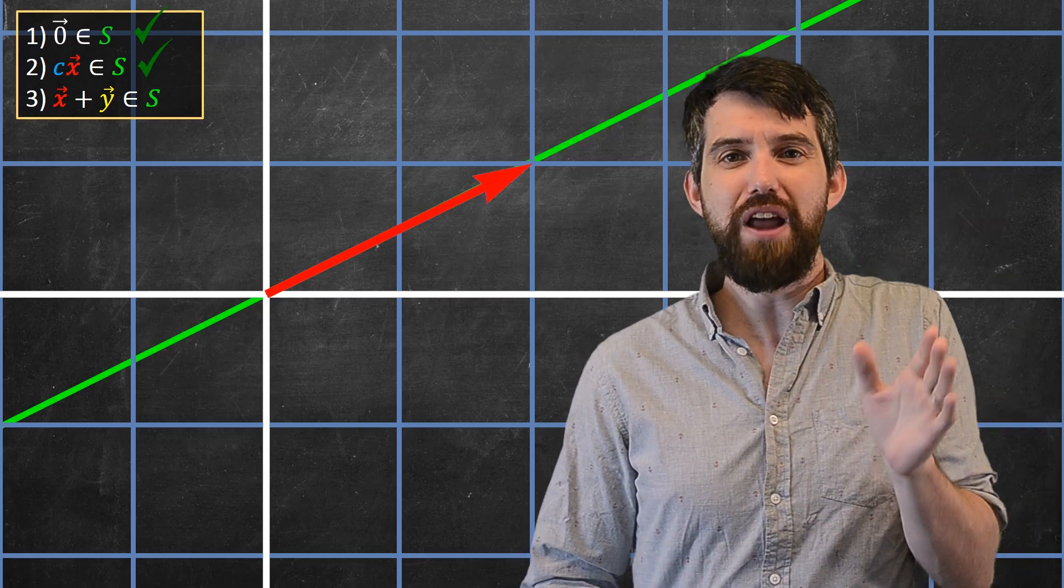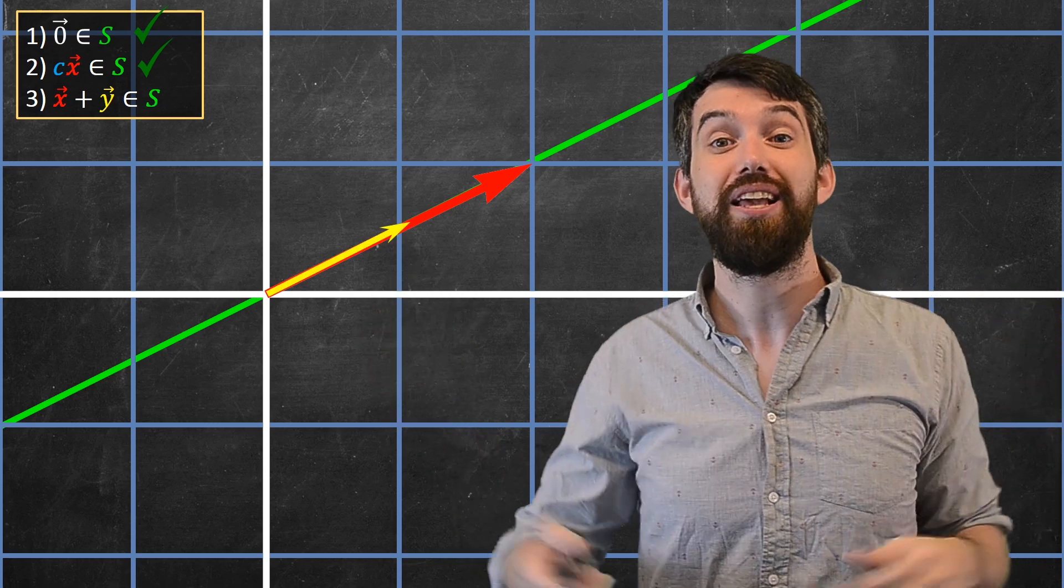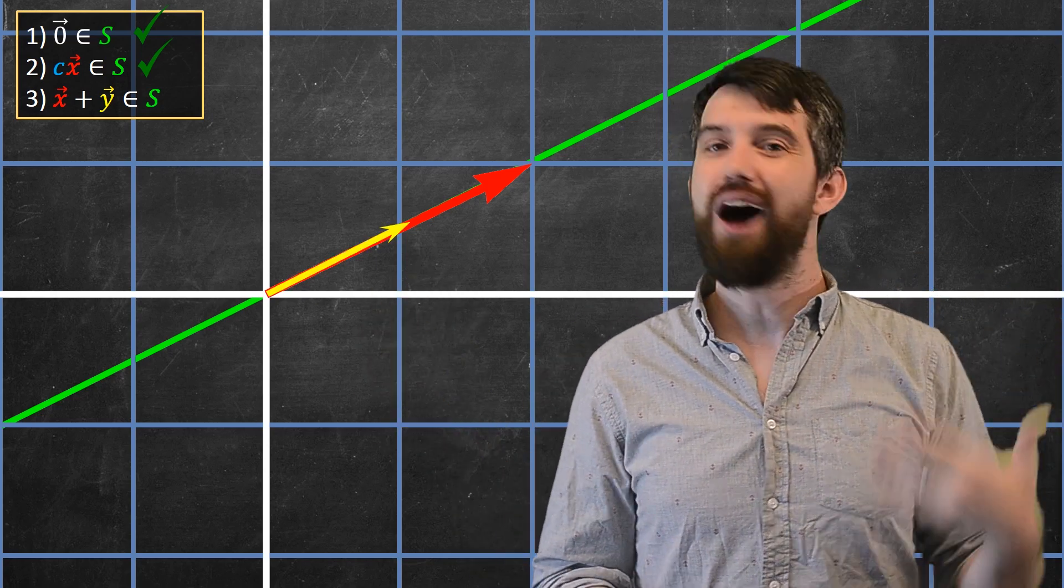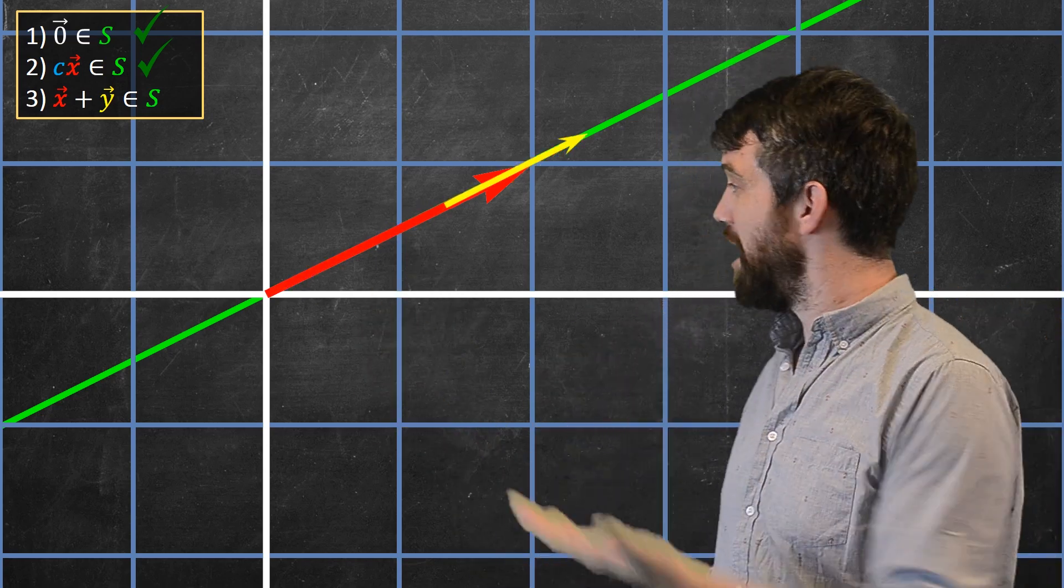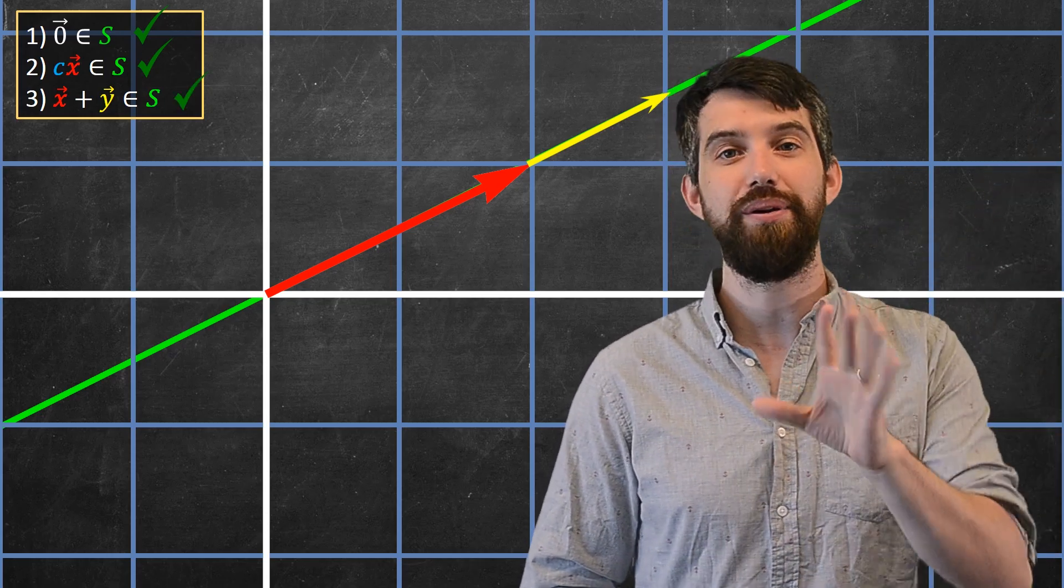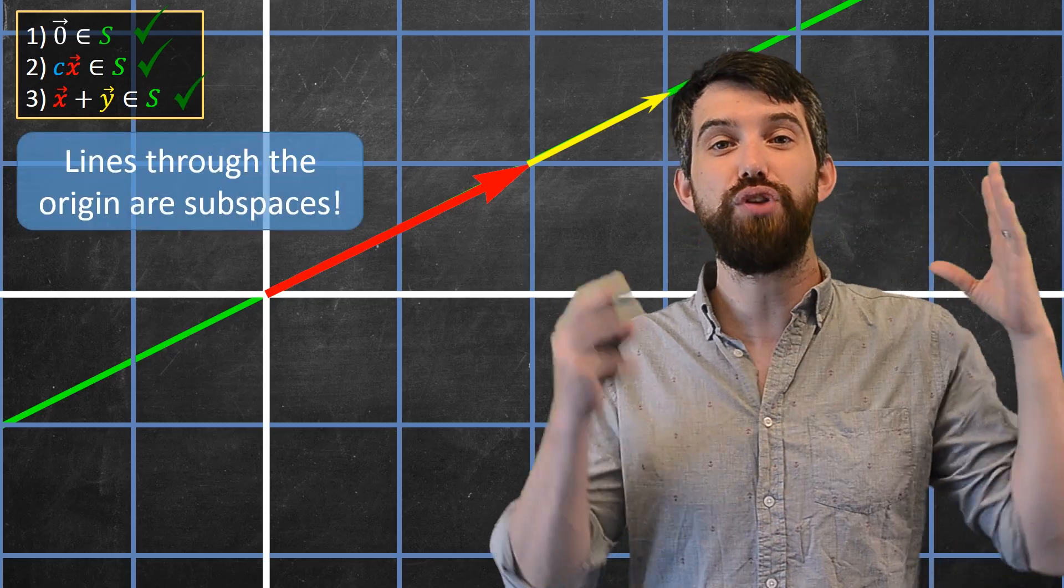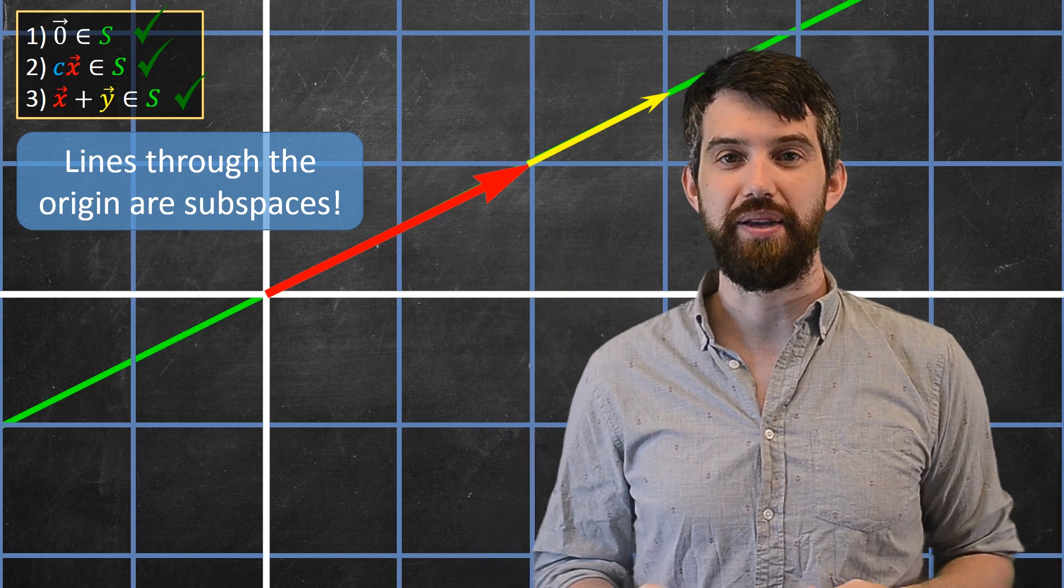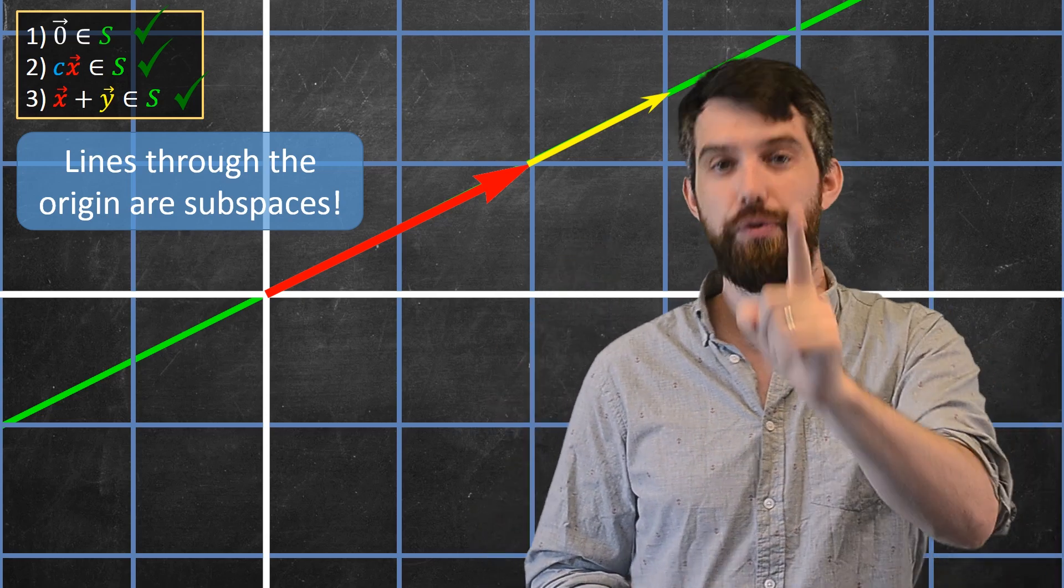And then if I take the red vector, but I add some other vector, some sort of yellow vector to this, well, how do I add these in the tip-to-tail manner? So I line them up, the red, then the yellow, and I'm still on the line. So all three of my properties are indeed true, and therefore lines through the origin are going to be subspaces. You can move this line wherever you want, but it has to go through the origin.